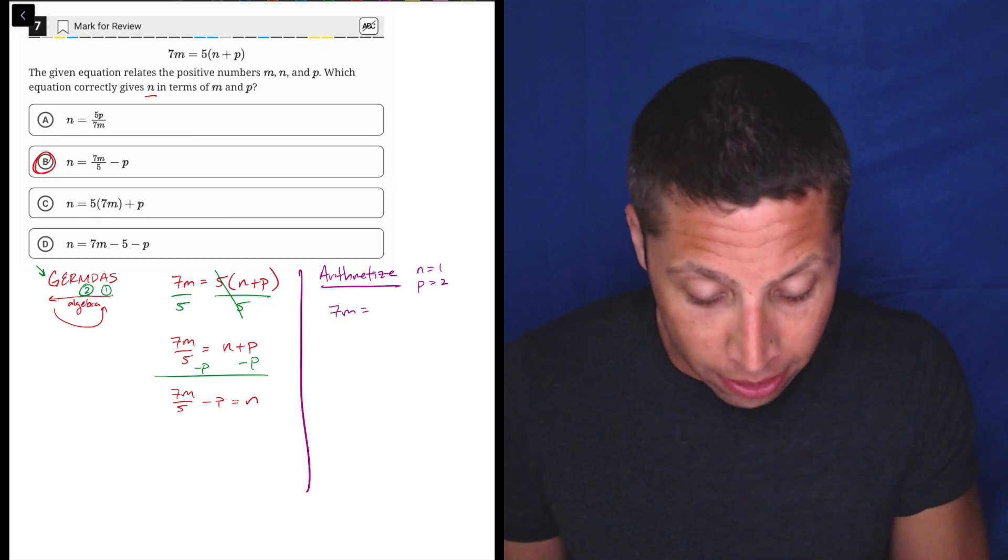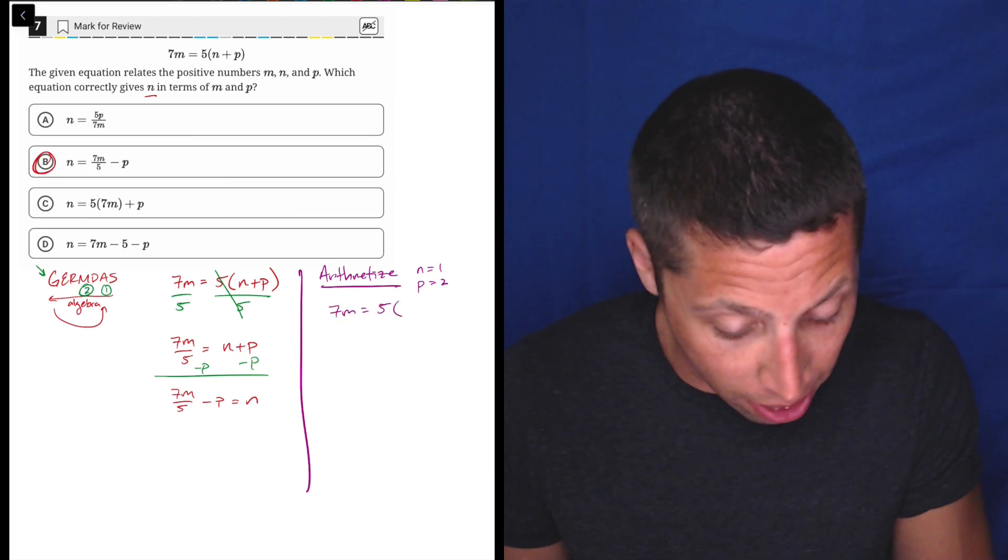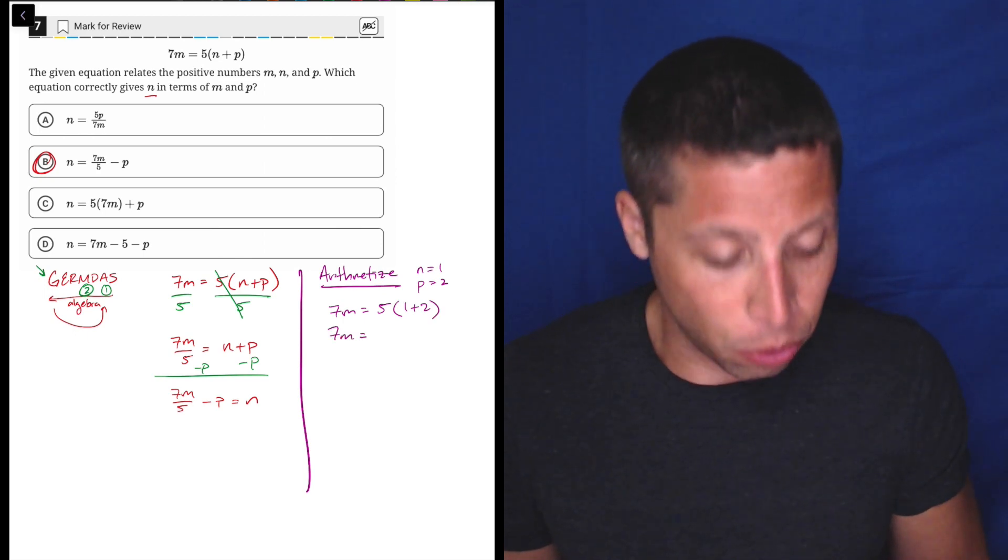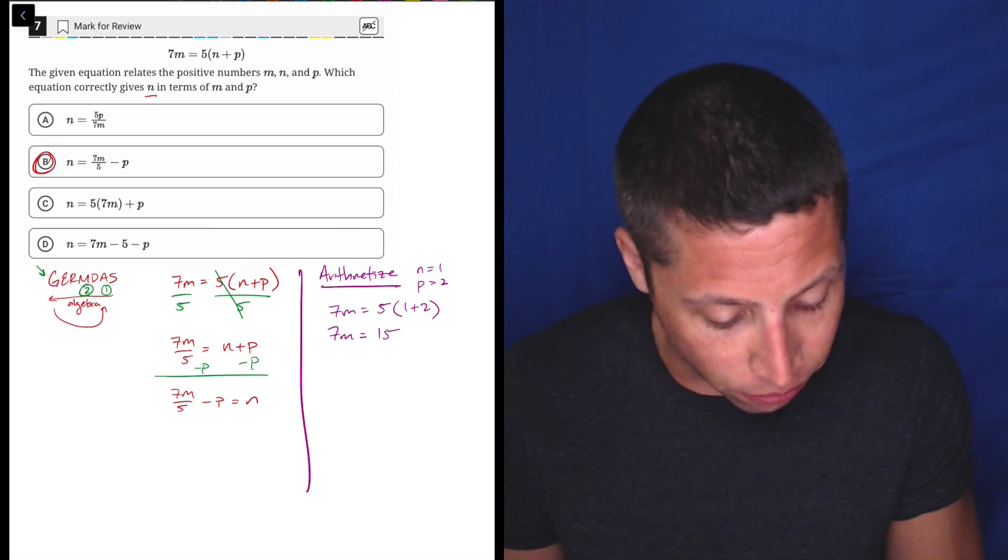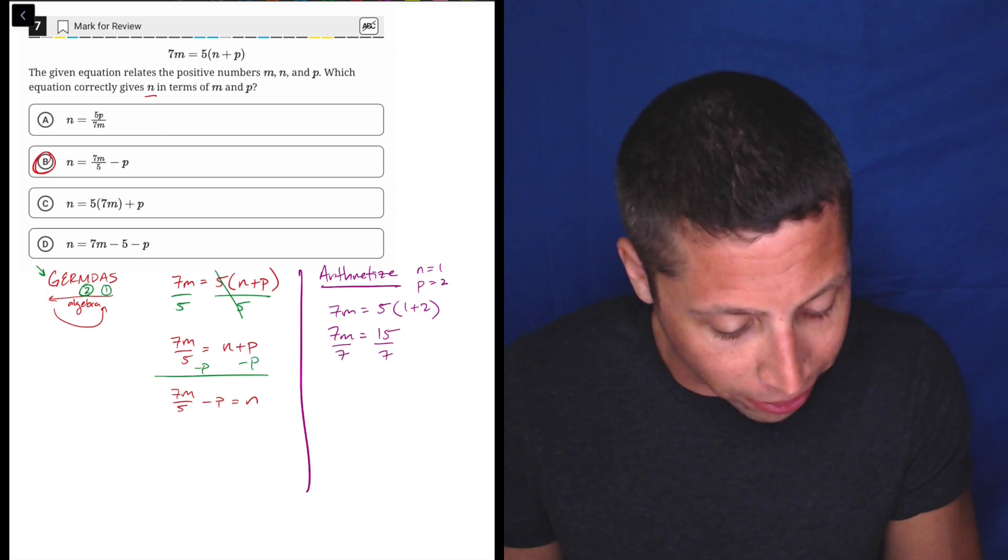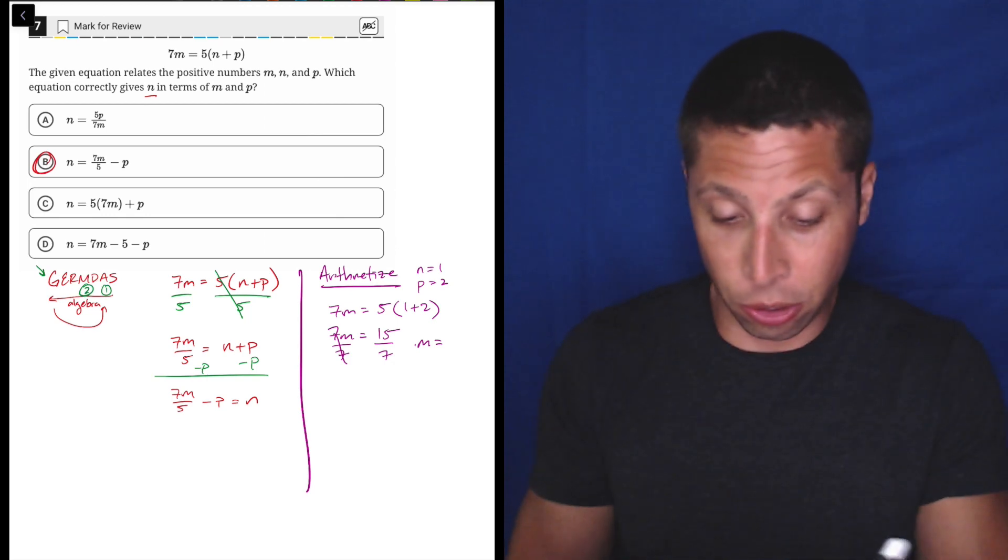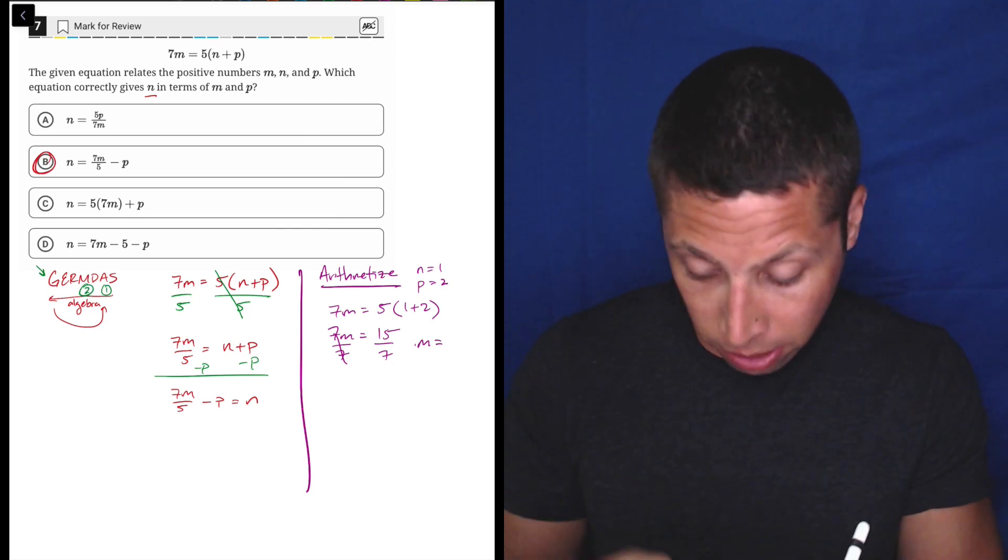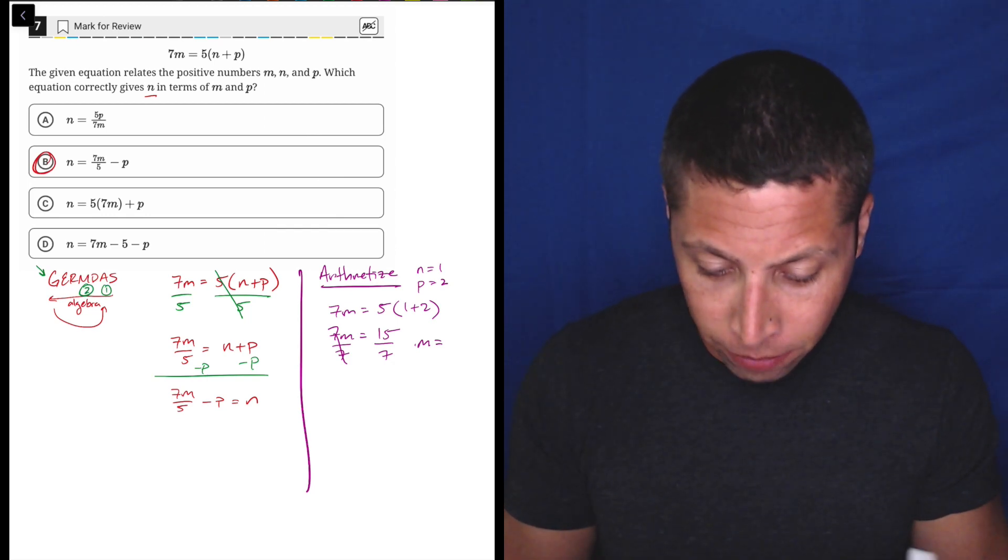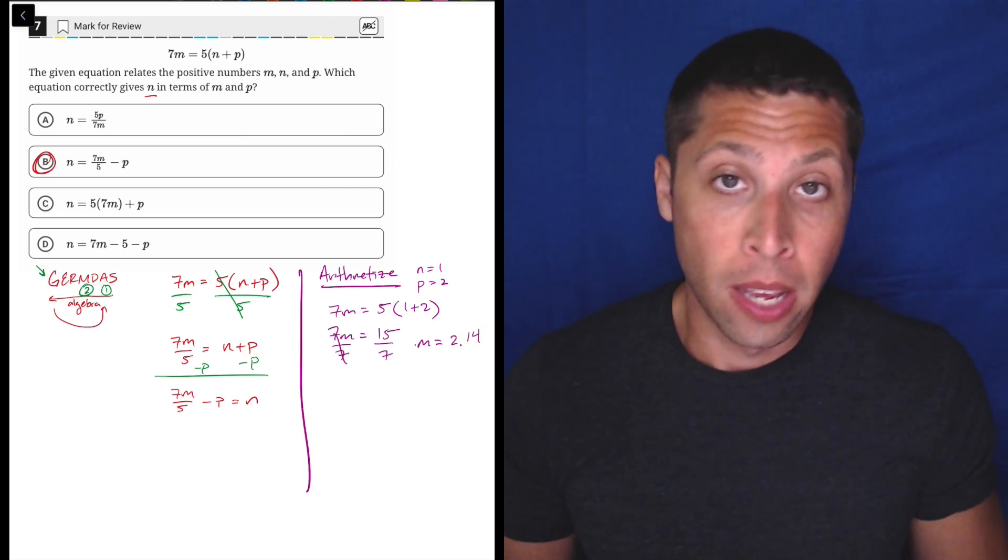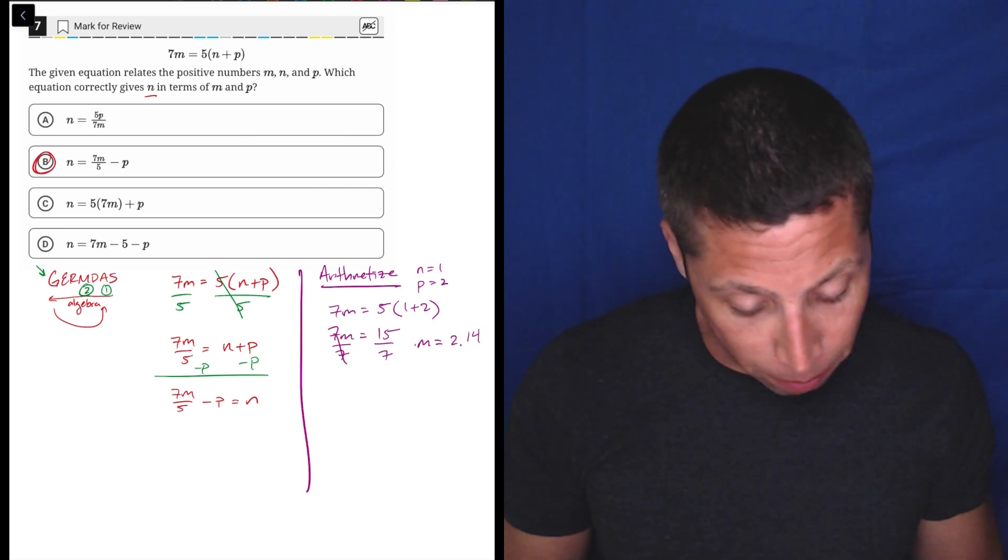So 7m is equal to 5 times 1 plus 2. So 7m is equal to 1 plus 2 is 3, 3 times 5 is 15, and then divide both by 7 to get m alone. And m is going to be, I'm going to just use the calculator here, 15 divided by 7, is 2.14. I don't care if it's a messy number, and I'm rounding it a little bit. That's okay.